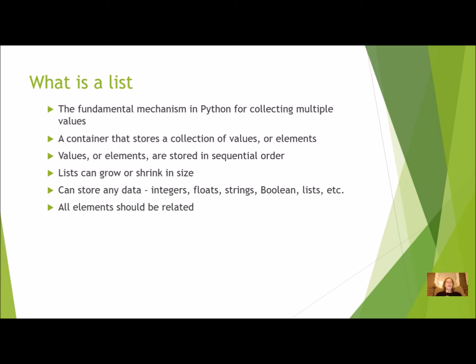Whatever you store, all elements should be related. If I'm going to store test scores, I should store test scores only — I shouldn't mix in names and test scores. Python will let you do that, but it's not very useful and you can get confused. Whenever you're creating a list, it should have one single purpose: to store one type of related data.